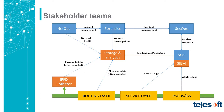At the top you've got network operations, who connect into storage and analytics for network health using IP fix collection. Forensics do per-incident analysis and investigations. Security operations run the security operations center, fed by alerts and logs from elements across the network — routing, physical layers, service and application logs, IPS, intrusion detection systems, and firewalls. All of these feed alerts and logs into the SIEM, which analyzes for threats and anomalous behavior, alerting the security operations center of triggered security events.